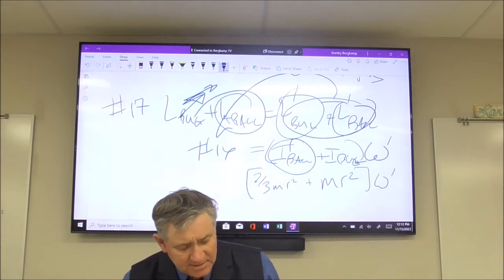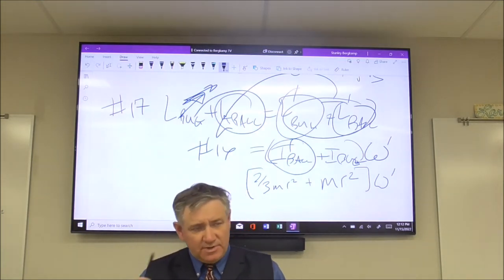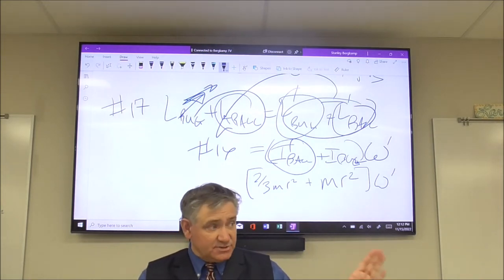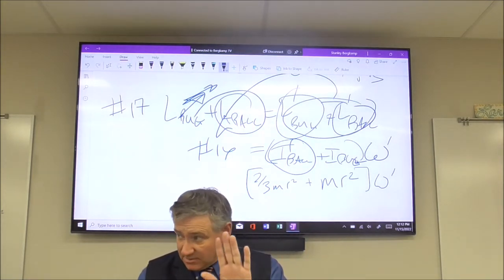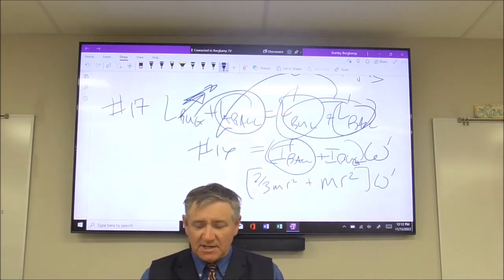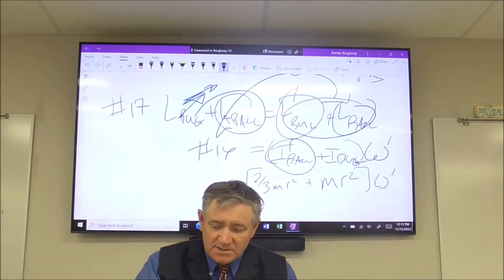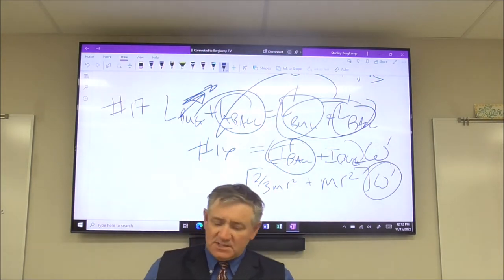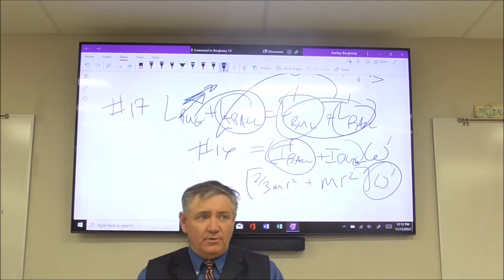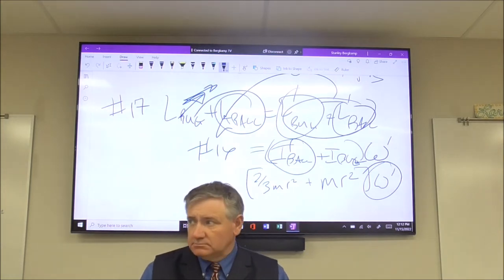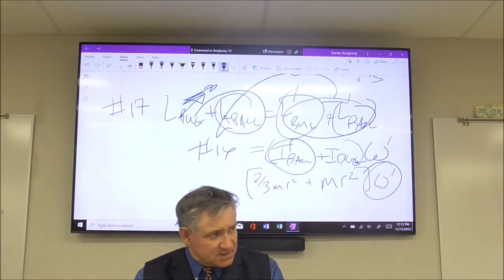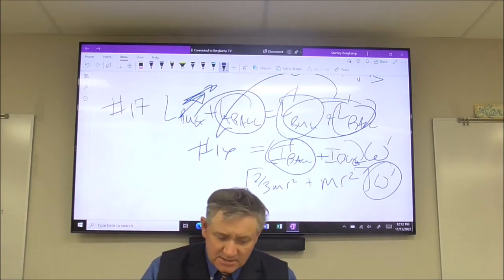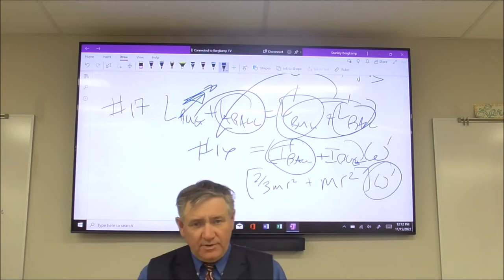If you did the conversion correctly on 16, the ball is spinning at 3.14 radians per second — pi radians per second. When you find the new rate of spin after the bug lands, is it going to be faster or slower than 3.14? Slower. So your answer to number 17 has to be less than 3.14 radians per second.